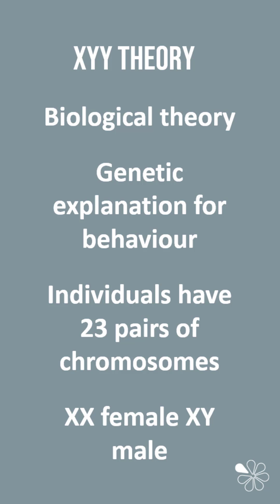XYY theory is based on the idea that individuals have 23 pairs of chromosomes and that the 23rd pair dictates a person's biological sex. This is XX for female and XY for male.